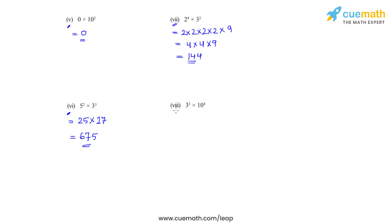Now we have the final eighth bit. We have been given 3 raised to 2, that is 3 squared which is 9, times 10 raised to 4. So we can write 1 followed by 4 zeros. On multiplying, we get the product as 9 followed by 4 zeros, which is 90000.